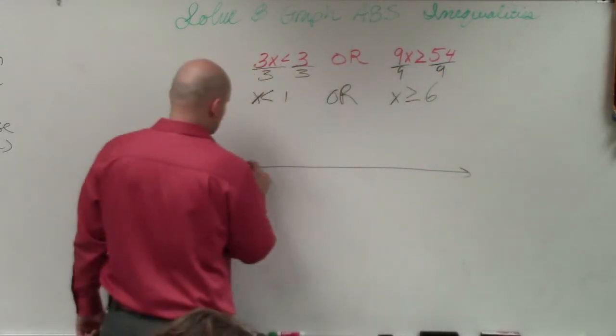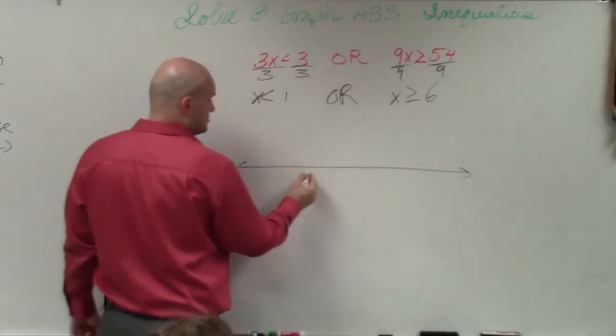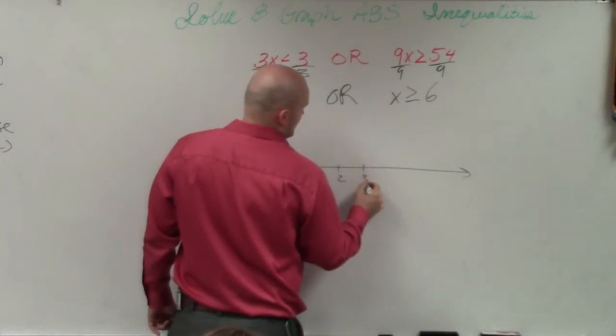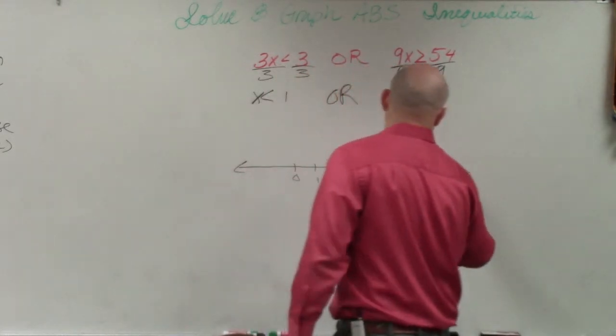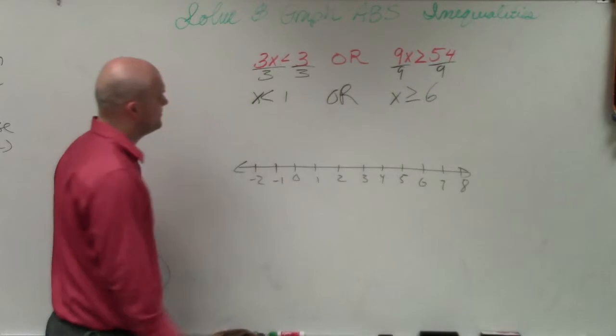Then we're going to choose a number line. And we want to make sure now we include both solution points. So I'll have 0, 1, 2, 4, 5, 6, 8, negative 1, negative 2. OK.